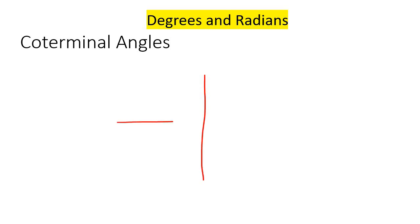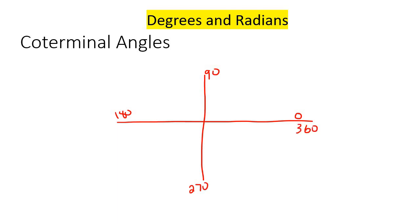Let's say you have your quadrants diagram. If we're working in degrees, we know that this is 0, 90, 180, 270, and 360. Now let's say we have an angle that is over here. If I draw this line, remember this line is called the terminal side.